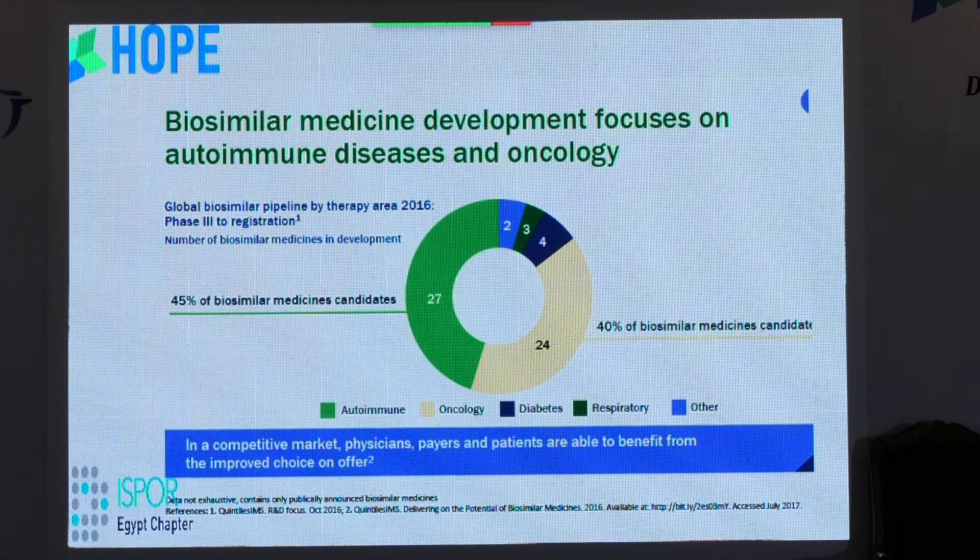About 45% of biosimilar medicine candidates are targeting autoimmune disease. However, only 40% of biosimilar medicines are targeting oncology, and the remaining approximately 15% are targeting other conditions such as diabetes and respiratory disease.